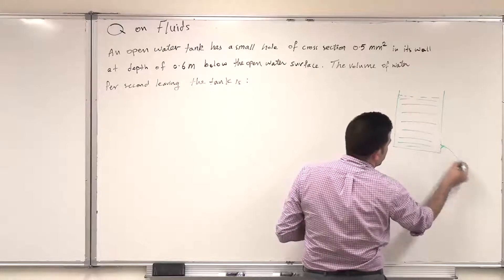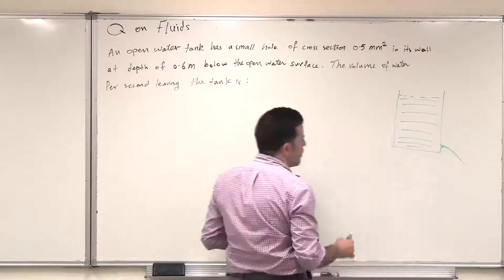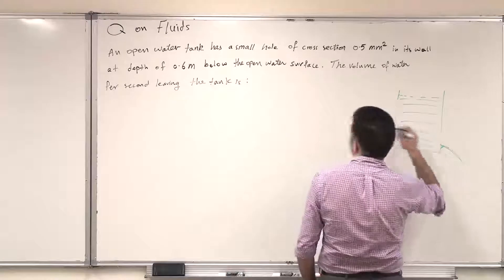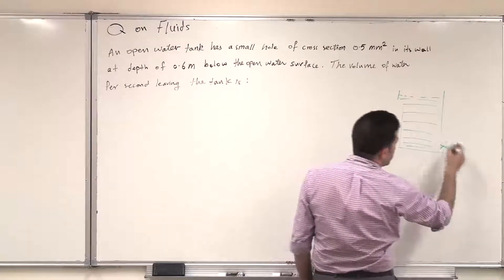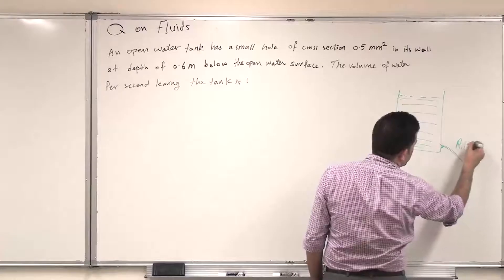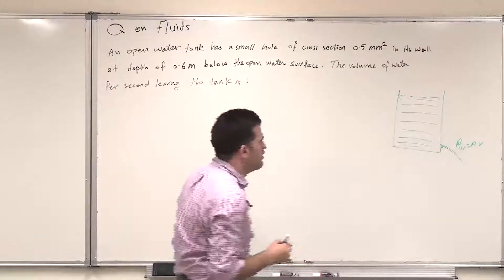So the tank, the water in the tank is leaving and we want to find the volume flow rate which is the volume of water leaving per second. So Rv which is Av. We want to find Rv which is Av.